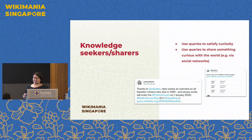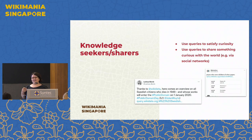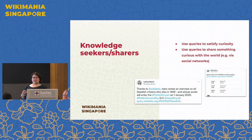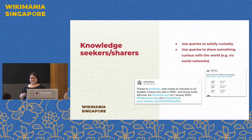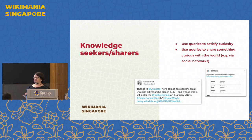Beyond that, there's a group I call knowledge seekers and sharers — people on the internet who want to find out weird, interesting, informative things and use queries to satisfy their curiosity. For example, if you want to know if there were any popes who had children who were also popes, the Wikidata Query Service can tell you — and the answer is yes, that is a thing. Or on public domain day, you can query for works that go into the public domain on a certain date and share that with the world.